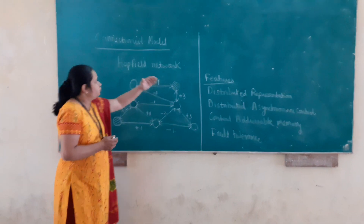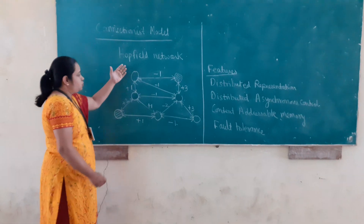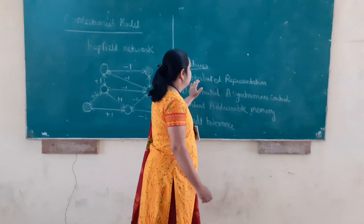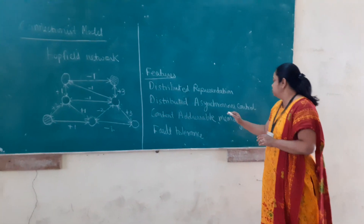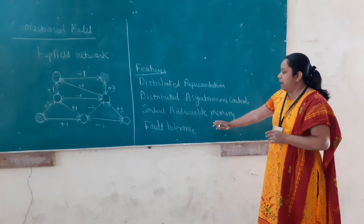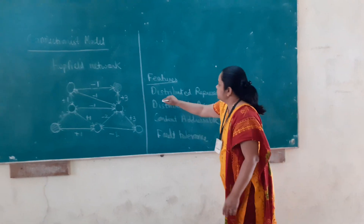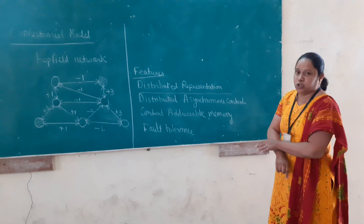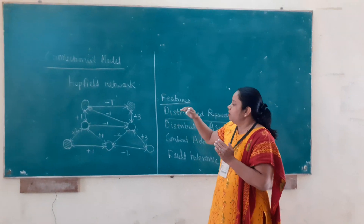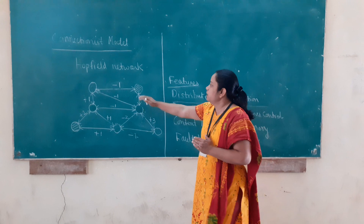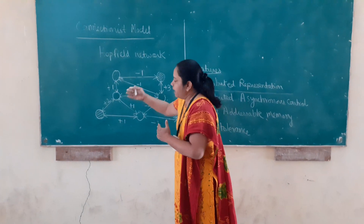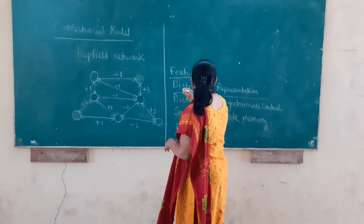So one network might have many stable states. Now what is the use of this Hopfield network and what are its features? This Hopfield network is based on the theory of memory. The features are: first, distributed representation; second, distributed asynchronous control which deals with a local state; third, content addressable memory; and fourth, fault tolerance. Now we will understand these features one by one. Distributed representation means this Hopfield network represents memory with the help of various patterns of processing elements.